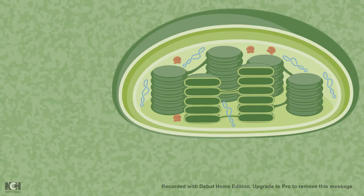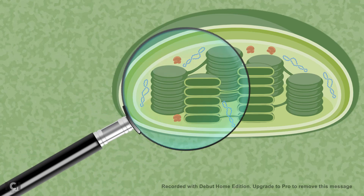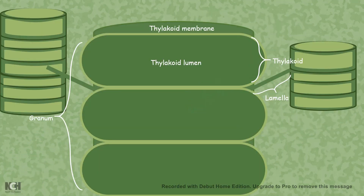Let's look at where the Calvin cycle takes place. Inside the plant cell there is a chloroplast, and if you zoom into the chloroplast you would see stack-like membranes known as thylakoids. The thylakoid lumen, which is the cavity of the thylakoid, is the site for light reactions, whereas the external part known as the stroma is the site for the light independent reaction.